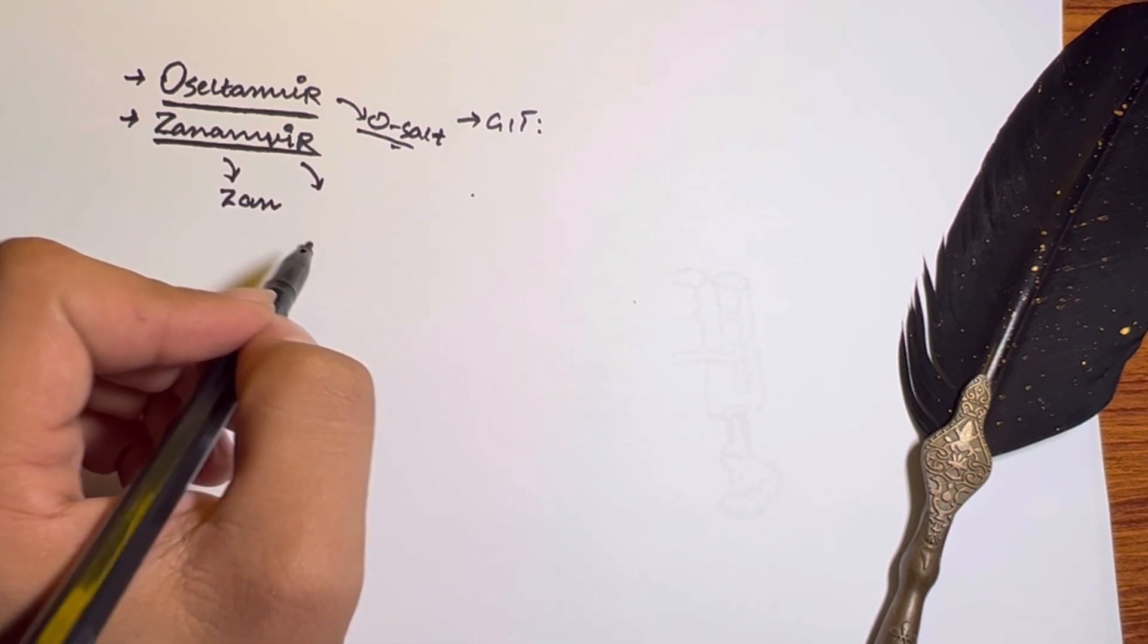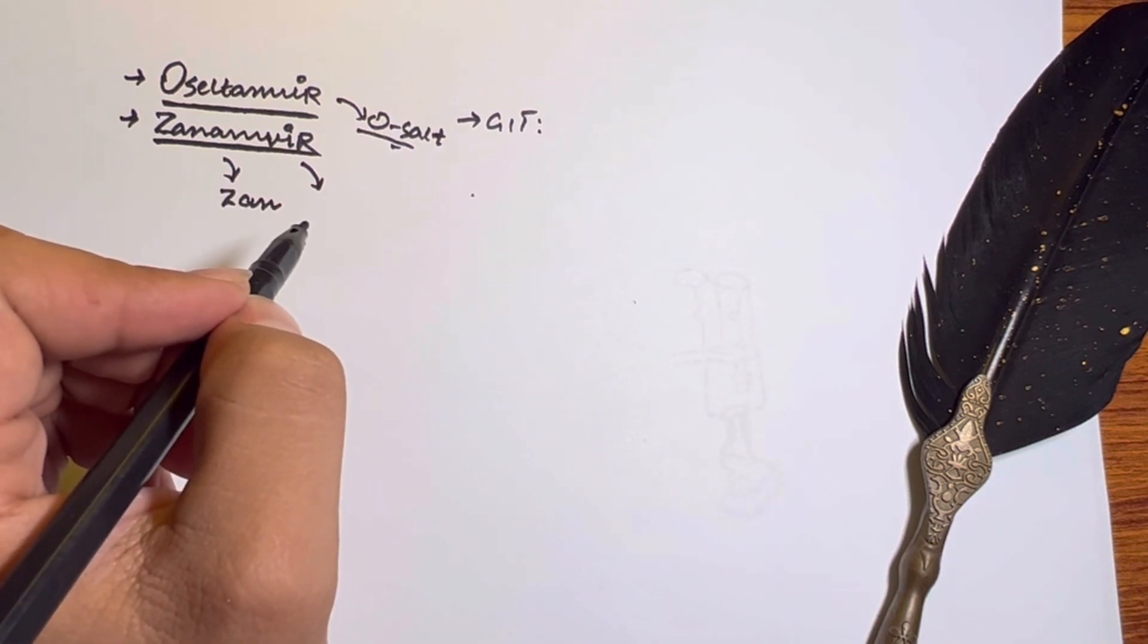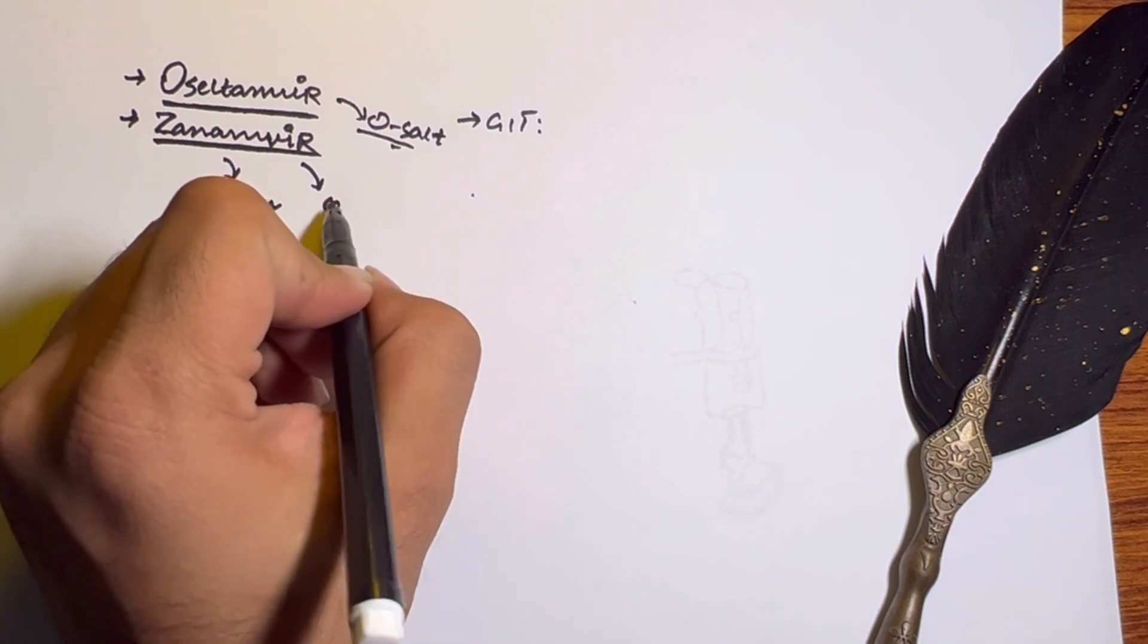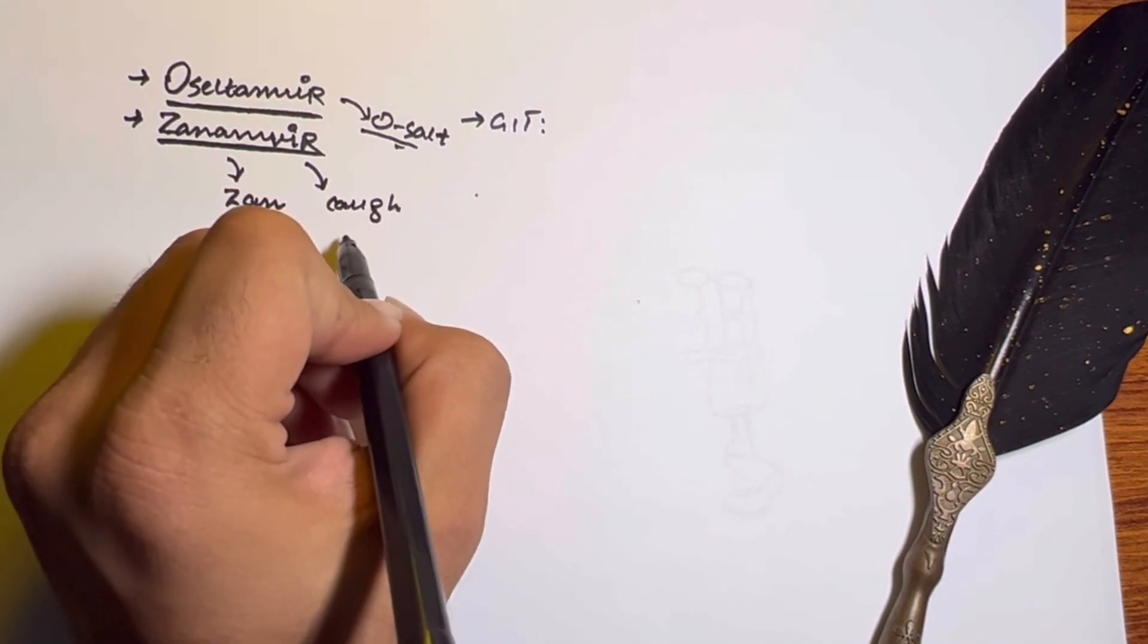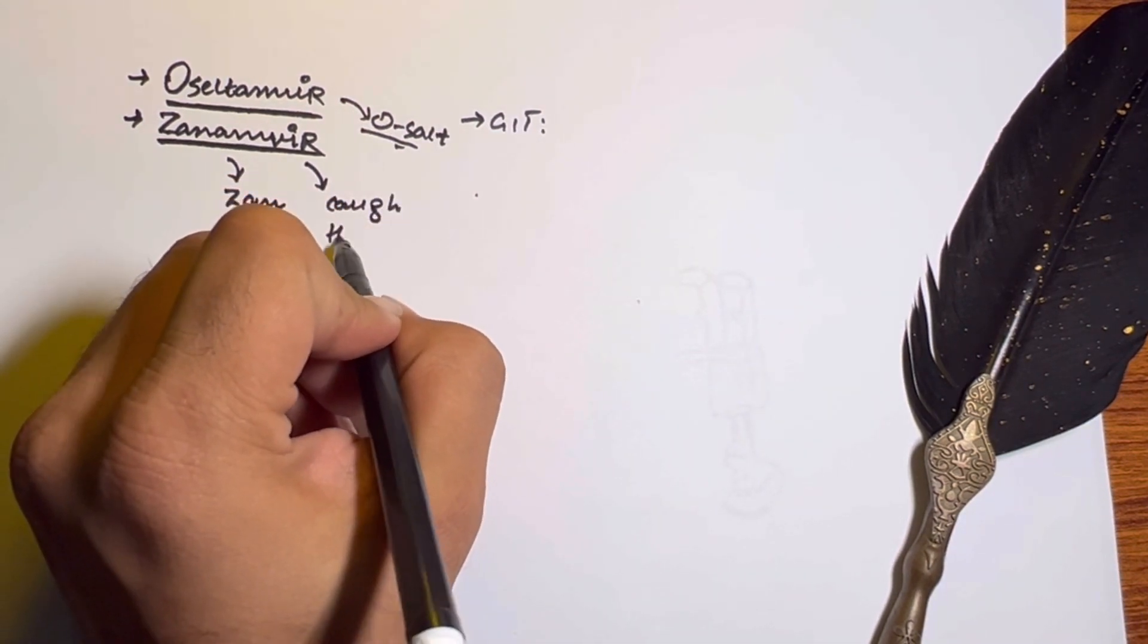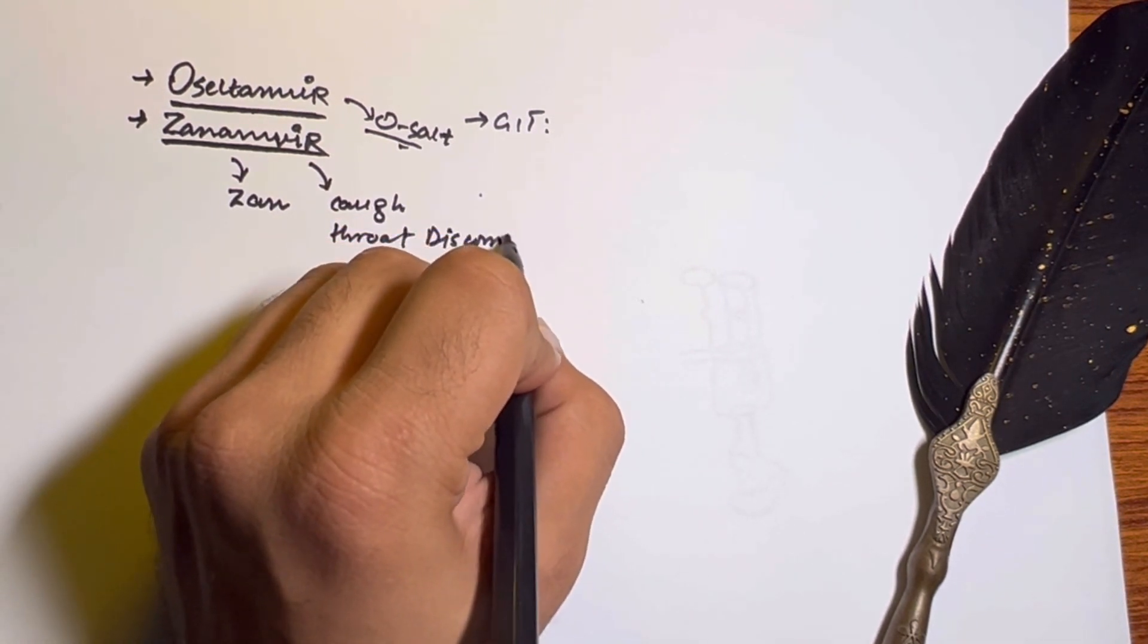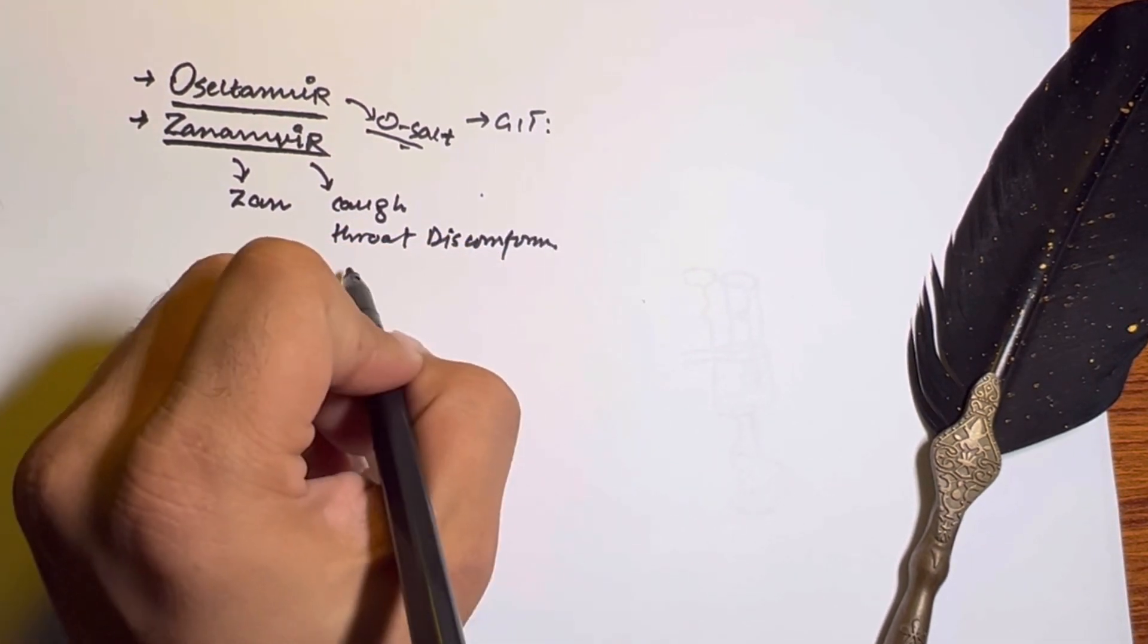Respiratory discomfort is also a side effect of zanamivir, including bronchospasm and throat discomfort as well as coughing. We discussed these two important antiviral drugs, their normal mechanism, and their side effects, which are very important.